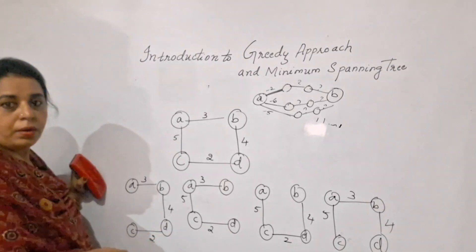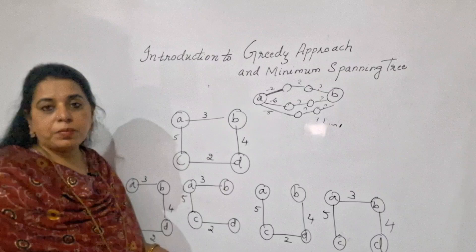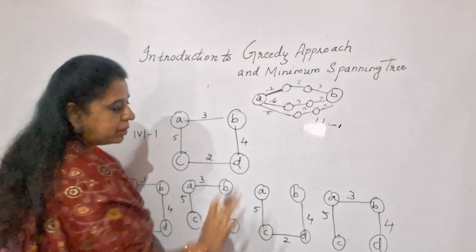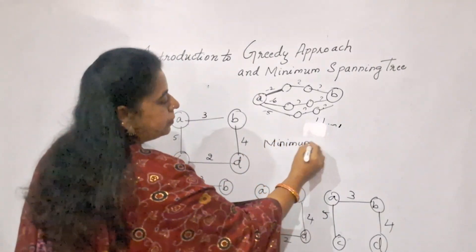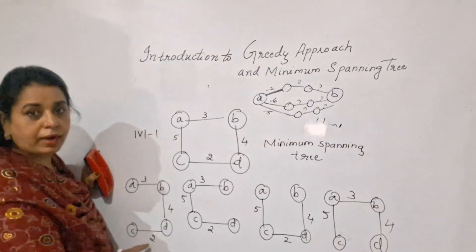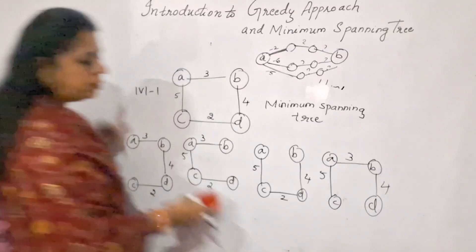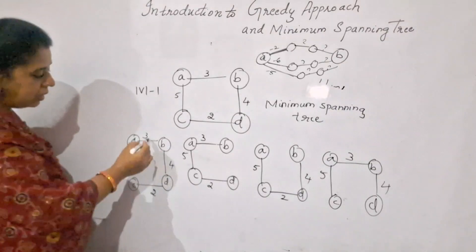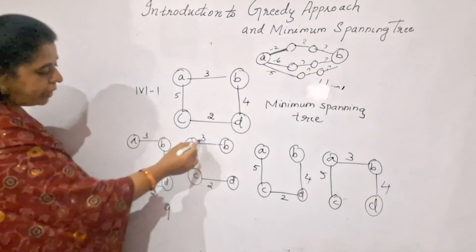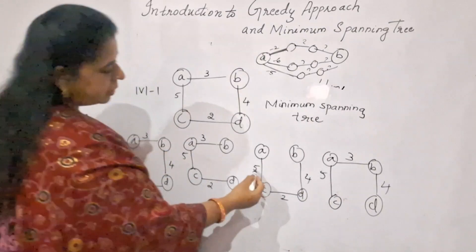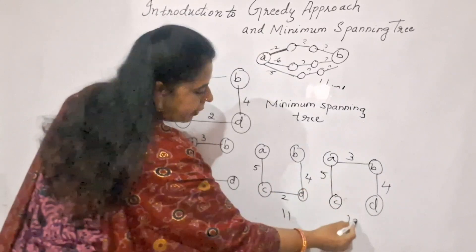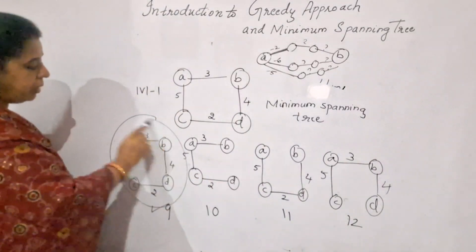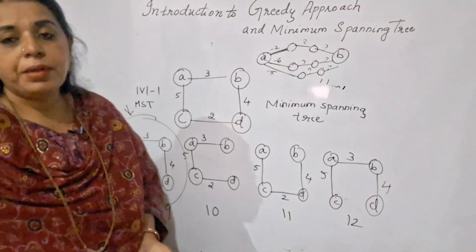From this graph, four different spanning trees can be constructed by removing one edge at a time. To find the minimum spanning tree, add up the weights on all edges of each spanning tree. The totals are: 3+4+2=9, 5+3+2=10, and the others give 11 and 12. The minimum cost is 9, so that spanning tree is the minimum spanning tree.